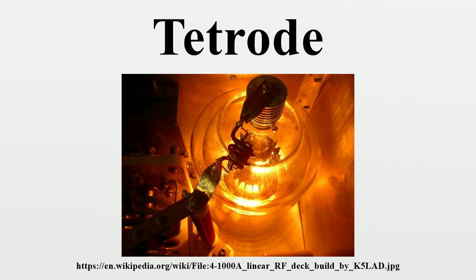In the bi-grid type of tetrode, both grids are intended to carry electrical signals, so both are control grids. The first example to appear in Britain was the Marconi Osram FE1, which was designed by H.J. Round, and became available in 1920. The tube was intended to be used in a reflex circuit where the same valve performed the multiple functions of RF amplifier, AF amplifier, and IO detector. The RF signal was applied to one control grid, and the AF signal to the other.